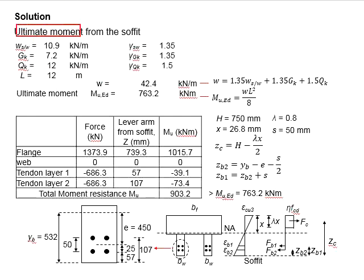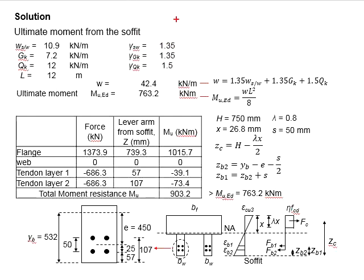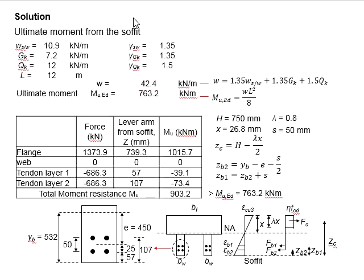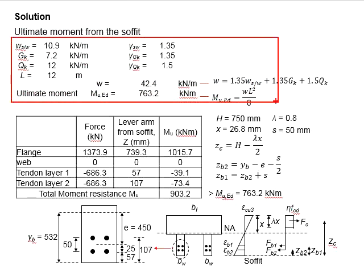As we are calculating the ultimate moment, the partial factors of safety of 1.35 and 1.5 are used. The self-weight is part of the permanent load, so the partial factor of safety for self-weight is 1.35. The total UDL acting on the member is 42.4 kN/m, as computed from the equation, and the ultimate moment Mu,Ed is determined from wL²/8, giving 763.2 kNm. This represents the load acting on the member.